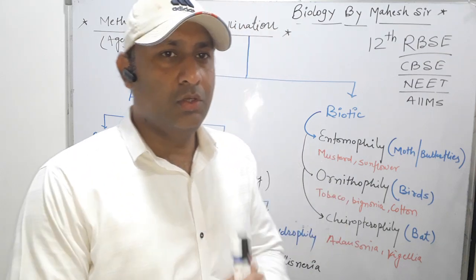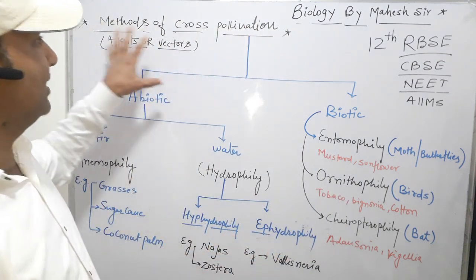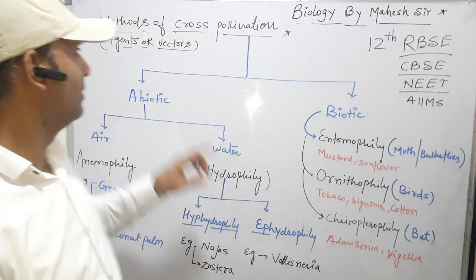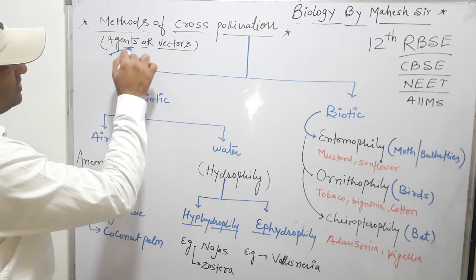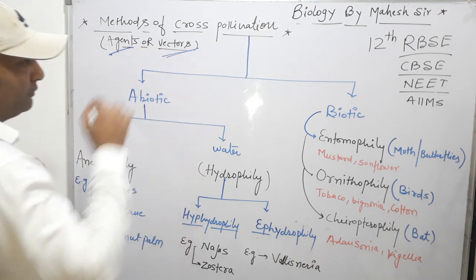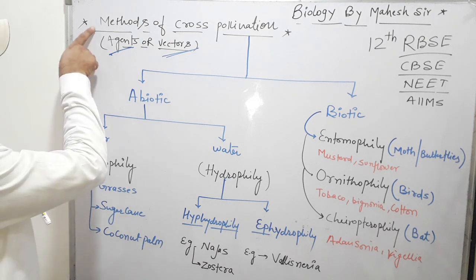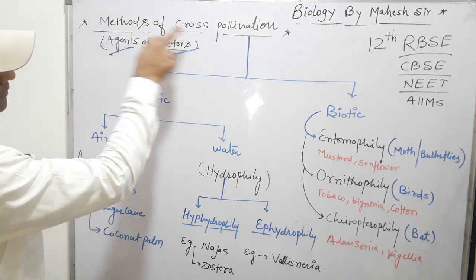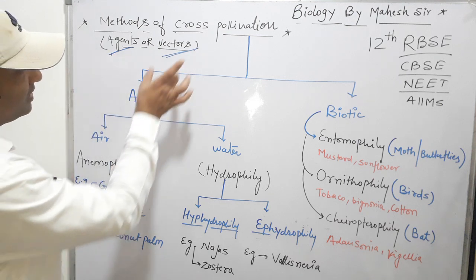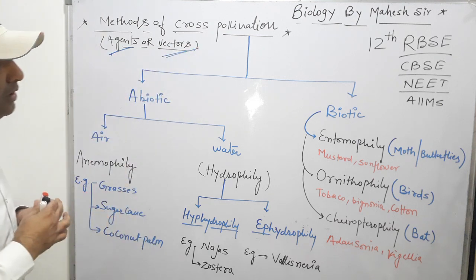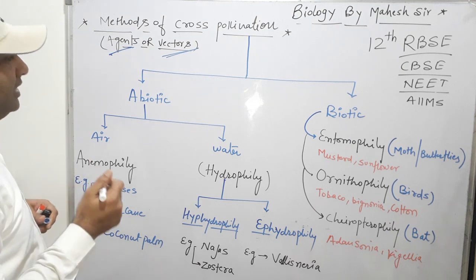Welcome students, today we will take the next topic which is methods of cross-pollination, agents of cross-pollination, or vectors of cross-pollination. The question may come in three types: they will ask either the methods of cross-pollination, agents of cross-pollination, or vectors of cross-pollination.